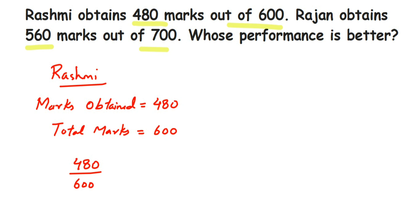Whenever you have to find out the percentage, you multiply by 100. Cancel the zeros — we have 6 in the denominator, 6 eights are 48, and there's a 0 left, so that comes here. This is equal to 80%. So Rashmi got 80 percent.